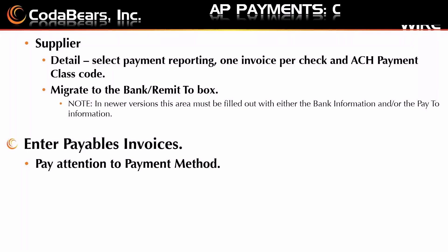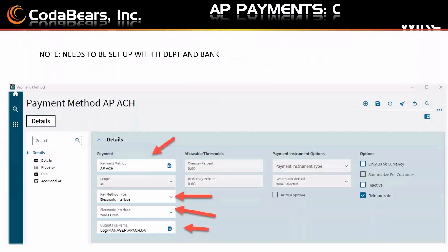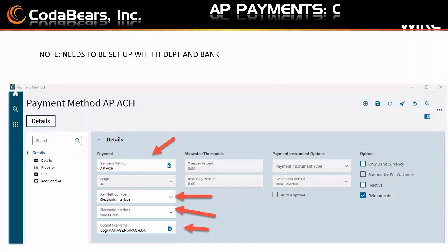We're going to then enter our payables invoices and here we're going to pay attention to our payment method. Some of the payment method setup will need to be done by your IT department and your bank. You can see this payment method is set up as APACH, it is used in AP, and the payment method is electronic interface. I set up a dummy one called wire funds. You'll have an output file name — a log that the system will send to your server where the log files are located. Your IT department will have to give you access to those log files because that's where the ACH payment information will wind up.